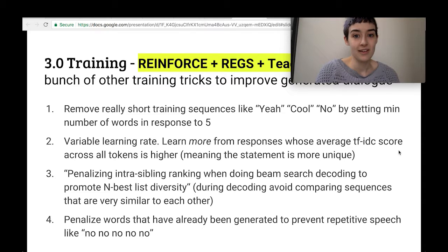So finally, they added a bunch of other tricks here to improve the performance of the model. They don't allow the generator to say really short things like yeah, cool, no. So they make it say at least five tokens in its utterance to avoid stupid boring responses.